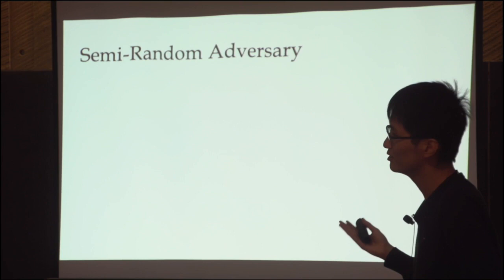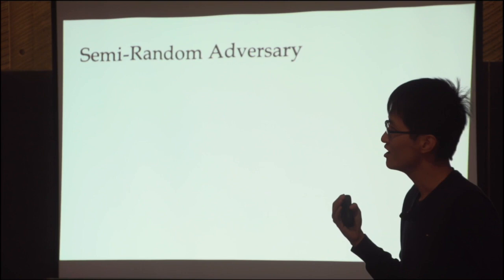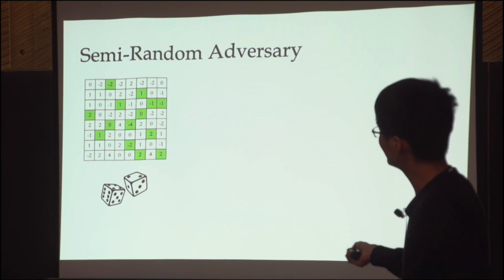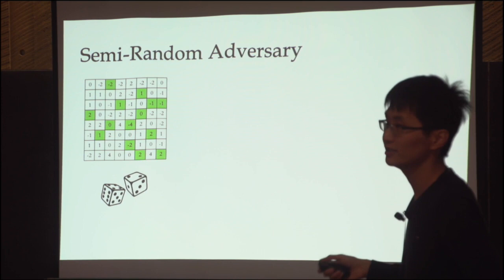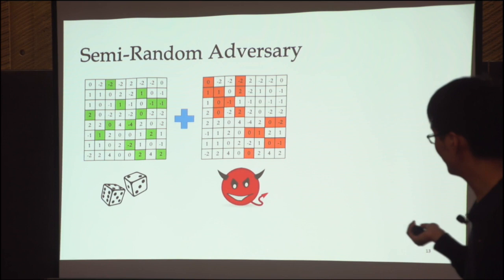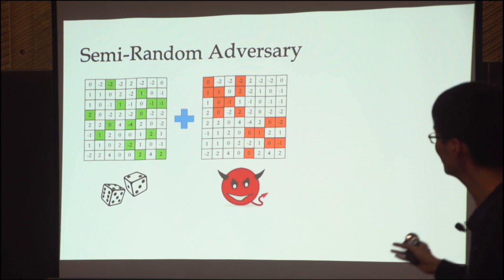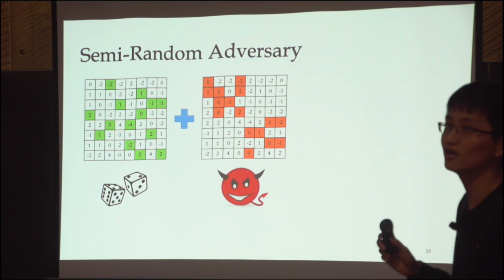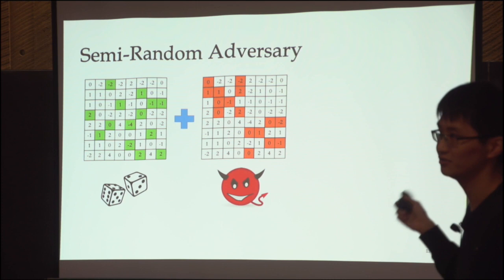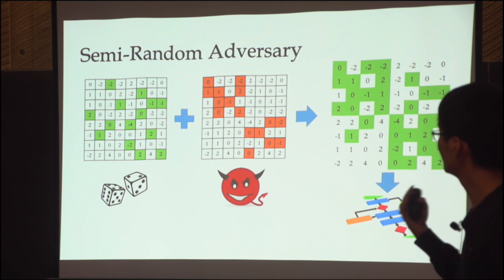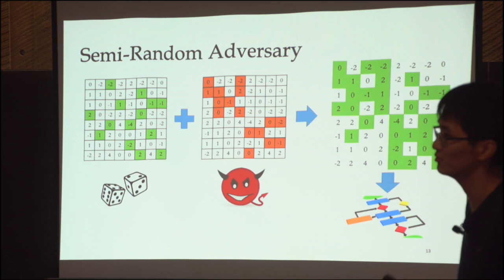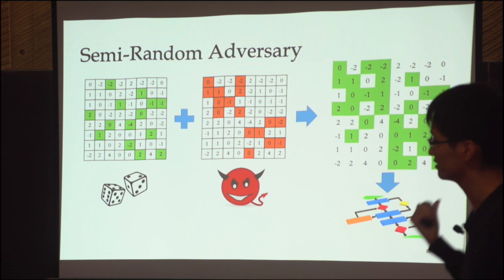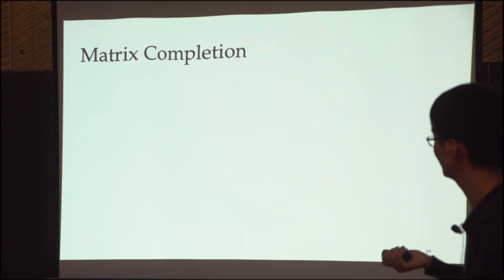We consider the following setting: before your algorithm sees the actual ratings, a powerful adversary can intervene. The green entries are revealed by nature first. Then the adversary — who can read your algorithm, look at the ground truth, and see which entries are revealed — decides to reveal additional entries. Importantly, the adversary is not allowed to change the entries, but can choose to reveal as many additional entries as desired. The algorithm then observes the union of both sets, without knowing which were revealed by nature and which by the adversary. The goal is to recover the underlying matrix exactly or approximately.